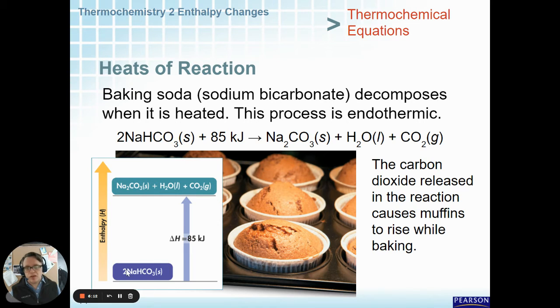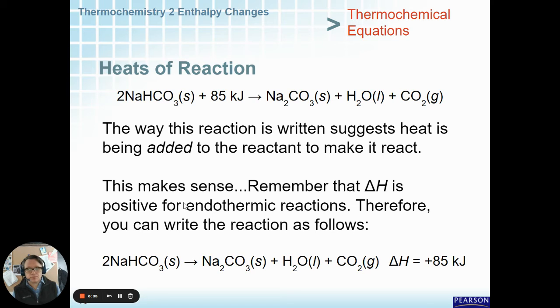In this case, the enthalpy diagram would go the opposite way. The reactant is sodium bicarbonate, baking soda, and it starts at a lower energy. You have to heat it up, in other words, add energy. So, in this case, the delta H would be positive. And the products at the end are going to have a higher energy because you put more energy into it. This makes sense. You are adding heat to make this happen. That is why the delta H is positive.